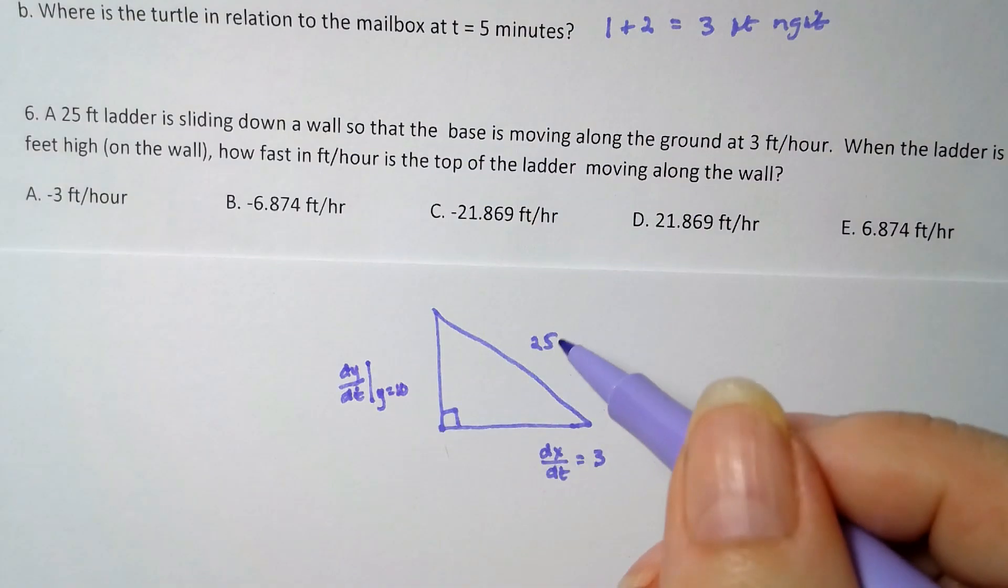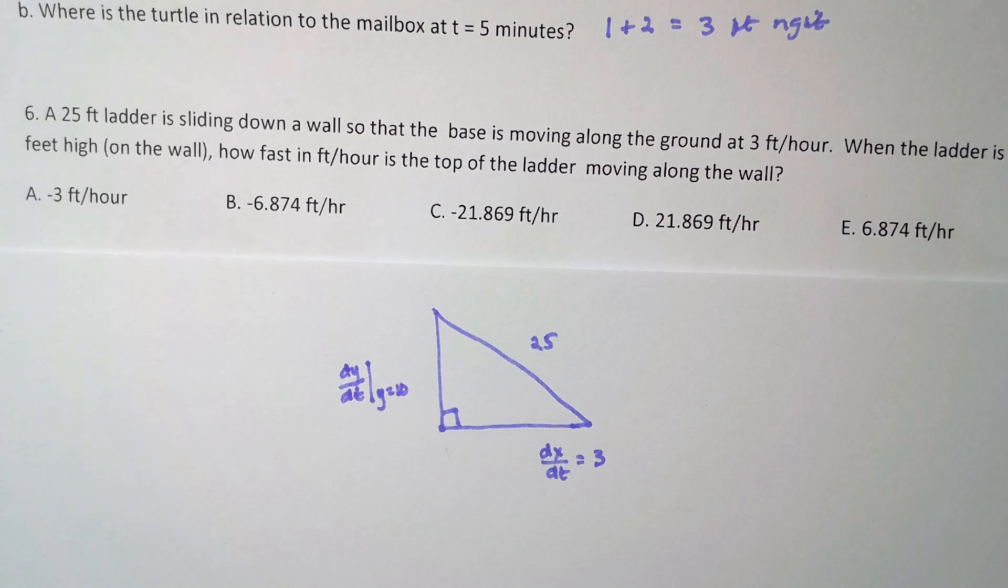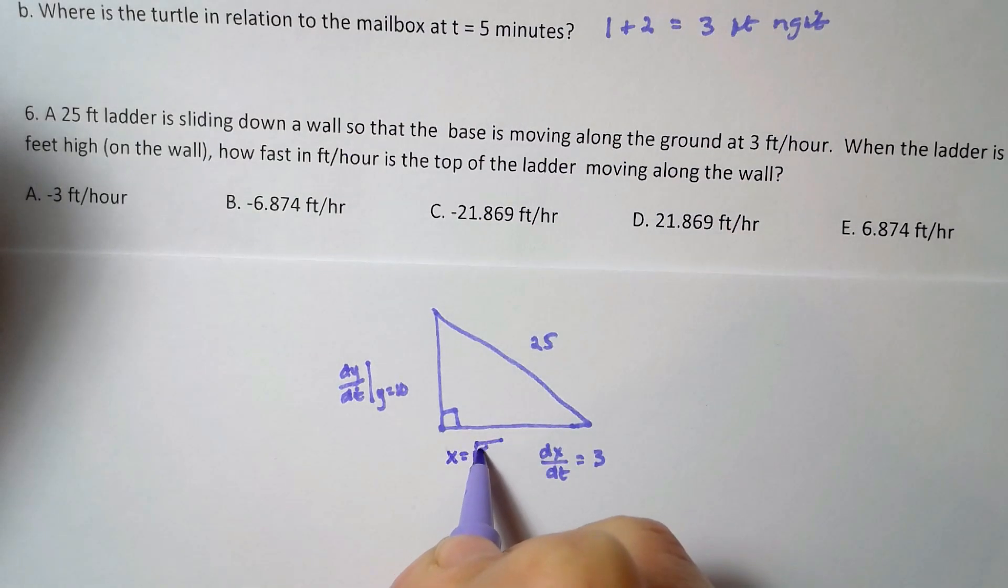So I know y is equal to 10, I know this is 25, and by Pythagorean theorem I can find the other missing side. 25 squared minus 10 squared, so it's 525. And that's not a perfect square, so I'm going to let x equal root 525. I'm just going to leave it like that, and you should too.